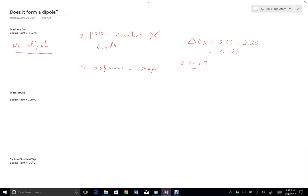And so I have no dipole. I don't need to check the shape of this molecule. There's no point. As soon as the bonds are not polar, there's no bond that's trying to create any sort of dipole, so there's no point.